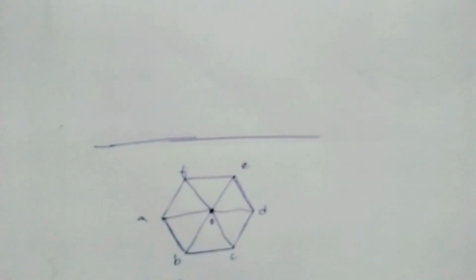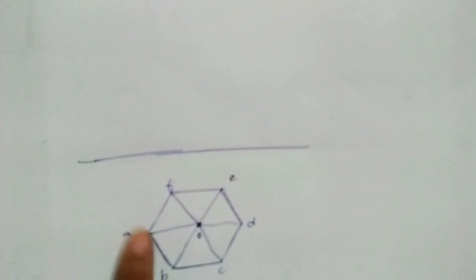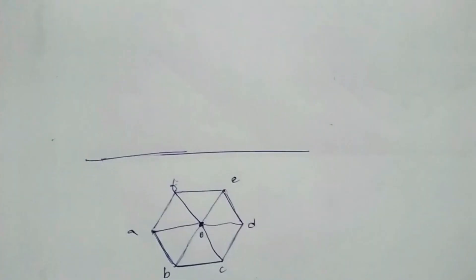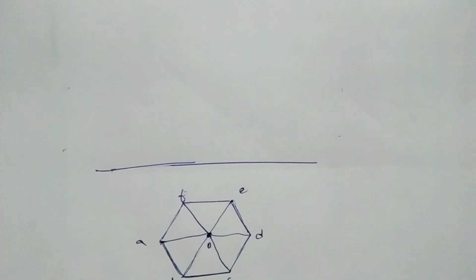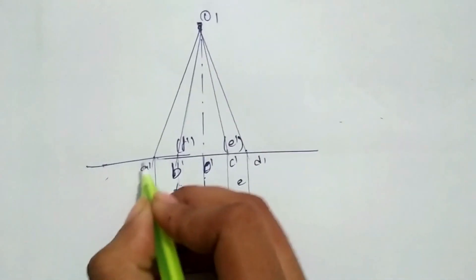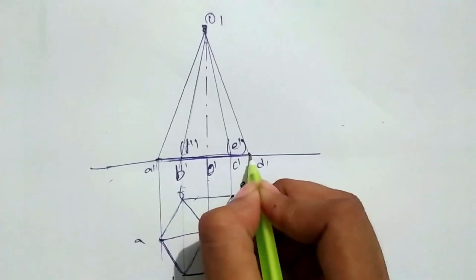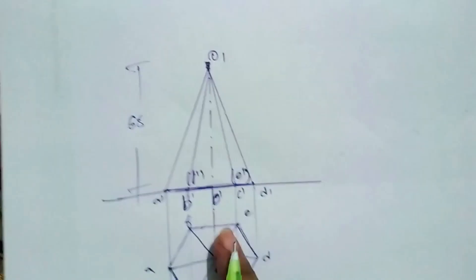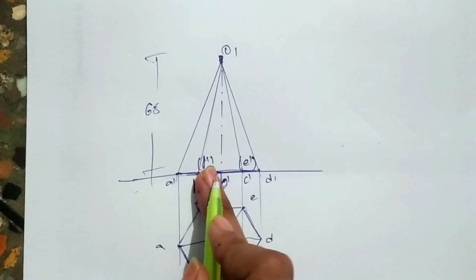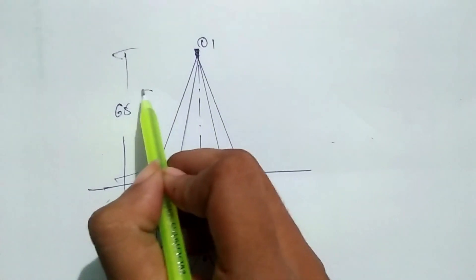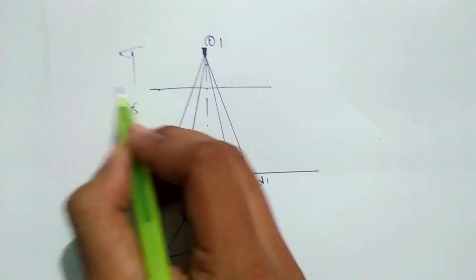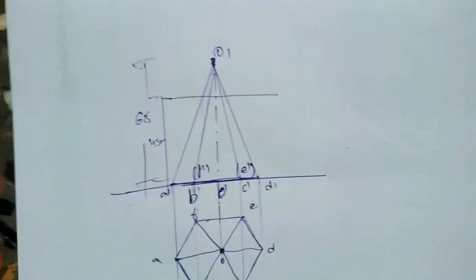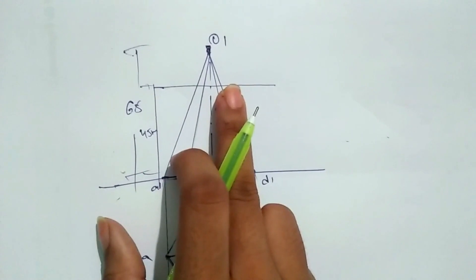I will show you the pyramid in the front view — the exact point of the pyramid. I will show you the front view with the height of 65 mm. I will show you the front view at 45 mm — I will show you the base part at 45 mm height. I will mark the height of 45 mm and show you the point.